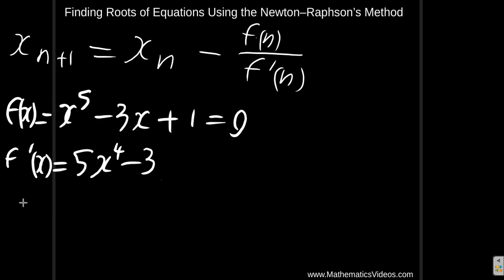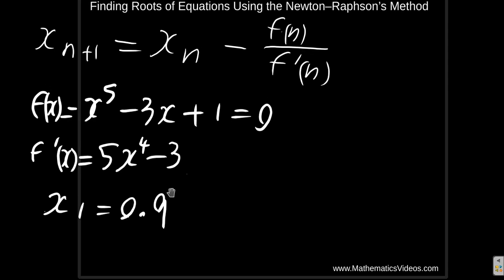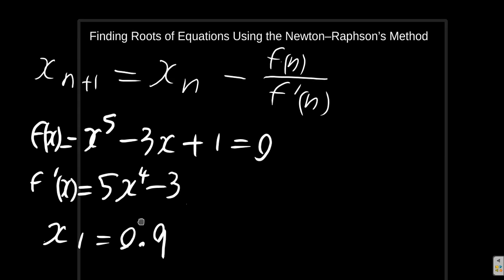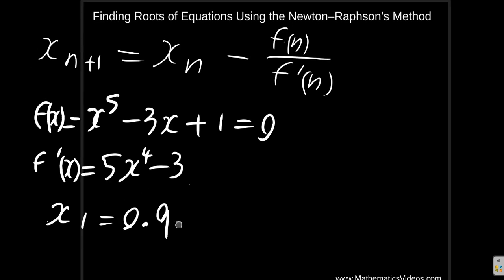So we say our x1 is equal to 0.9. Some persons might say x0 and that's where we start. If you prefer to use x0, no problem. You would just start with x0, then you go to x1, x2, and so on. x1 is the first estimate that we have.